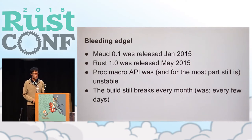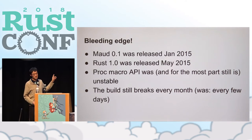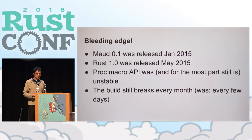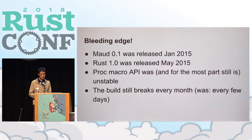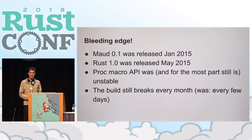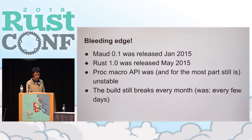If you look at the history of Maud, you'd notice that its first release was in the beginning of 2015, but Rust 1.0 was released in the middle of 2015 — meaning I started working on this before Rust was officially released. That led to a sort of trial by fire: I had to learn to deal with these breaking changes coming in all the time, and that gave me some really valuable skills working with procedural macros.